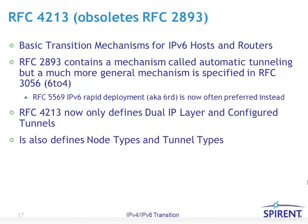RFC 2893 was the main standard defining transition mechanisms for IPv6 hosts and routers, subsequently obsoleted by RFC 4213. One concept obsoleted was automatic tunneling from RFC 2893; a more general mechanism was written in RFC 3056, which defined the 6to4 mechanism. Although RFC 5569 — 6RD, or IPv6 Rapid Deployment — is now preferred over 6to4. RFC 4213 now only defines dual IP layer and configured tunnels, with no reference to automatic tunnels. It also defines node types and tunnel types.